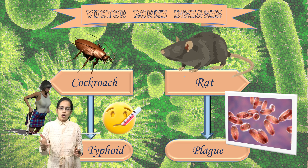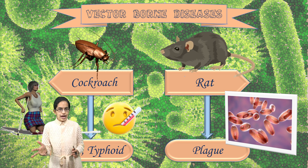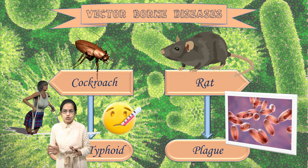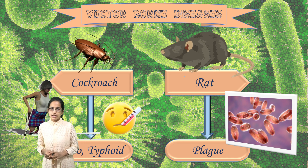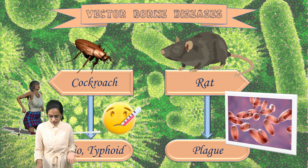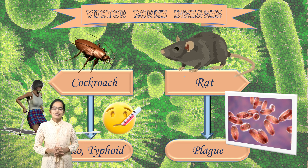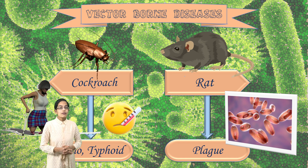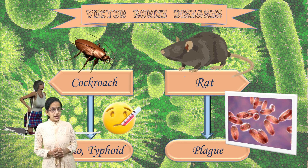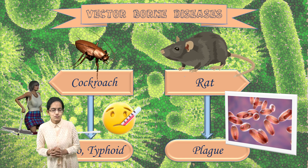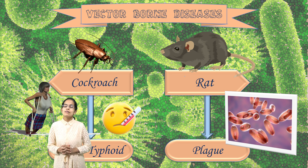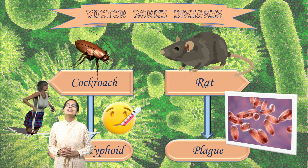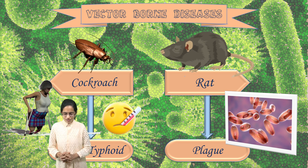To sum up: mosquitoes, houseflies, cockroaches, rats, sandfly, and tsetse fly are the most common vectors. This is a very important topic for your olympiad preparations and science quizzes. We will be covering many such short videos for you — stay tuned and have a wonderful day.